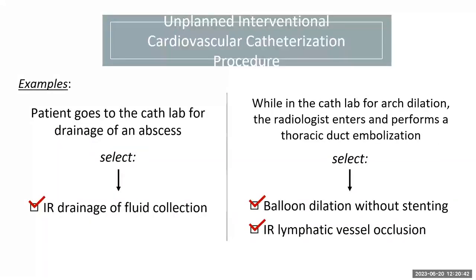Two examples: First, a patient goes to the cath lab for drainage of an abscess—select IR drainage of fluid collection, even though done by an interventional cardiologist in the cath lab. Second, while in the cath lab for arch dilation, a radiologist performs a thoracic duct embolization—select both balloon dilation without stenting and IR lymphatic vessel occlusion. We're selecting the procedures that were done regardless of location or the interventionalist performing them.